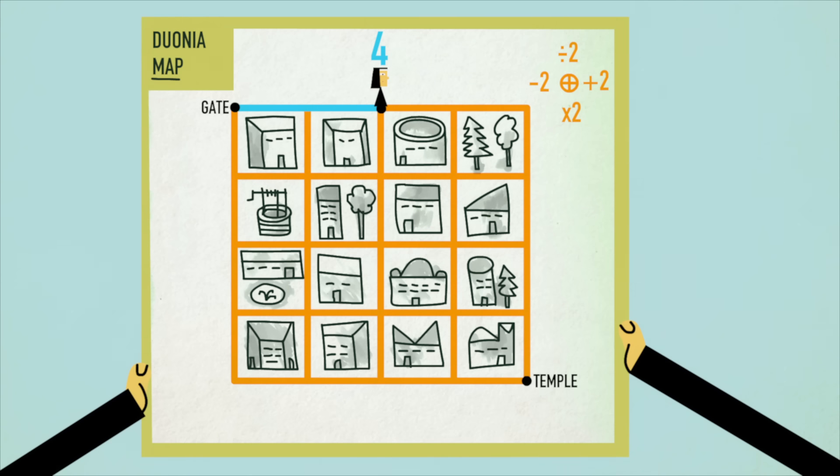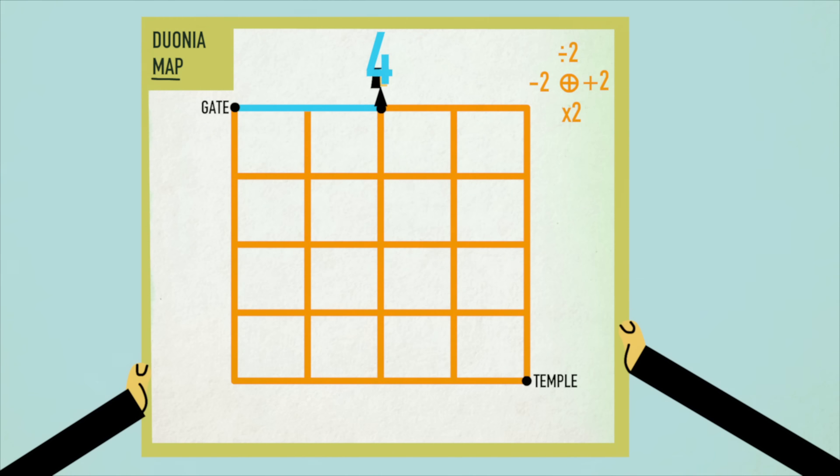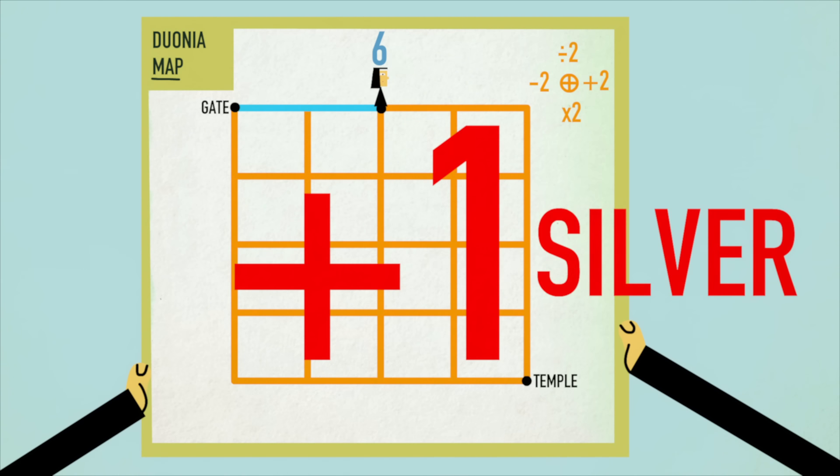You look at the map to consider your options. Walking towards the temple always increases the tax, and walking away decreases it, so it seems like you can never reach it without owing silver. But what happens when you walk around a single block? If you start out owing four silver and go clockwise starting east, your tax bill becomes six, then twelve, then ten, then five. If you looped again, you'd owe seven, fourteen, twelve, and six. It seems that each clockwise loop leaves you owing one extra silver.